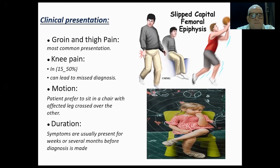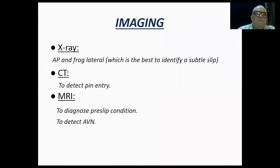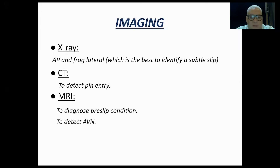Duration of symptoms is important. We have a pathognomonic sign — the Drehmann sign — where you get obligatory external rotation while flexing the hip. You also see loss of hip internal rotation, abduction, and flexion. The foot is externally rotated, and you get atrophy of the thigh muscles. X-rays in the AP and frog-lateral views are needed; the frog-lateral is better than AP in early cases. CT detects the diagnosis very well and helps plan the entry point of the screws. MRI is used to diagnose the pre-slip condition; if you suspect a pre-slip, you proceed to prophylactic fixation. MRI also detects AVN if you are contemplating open reduction.